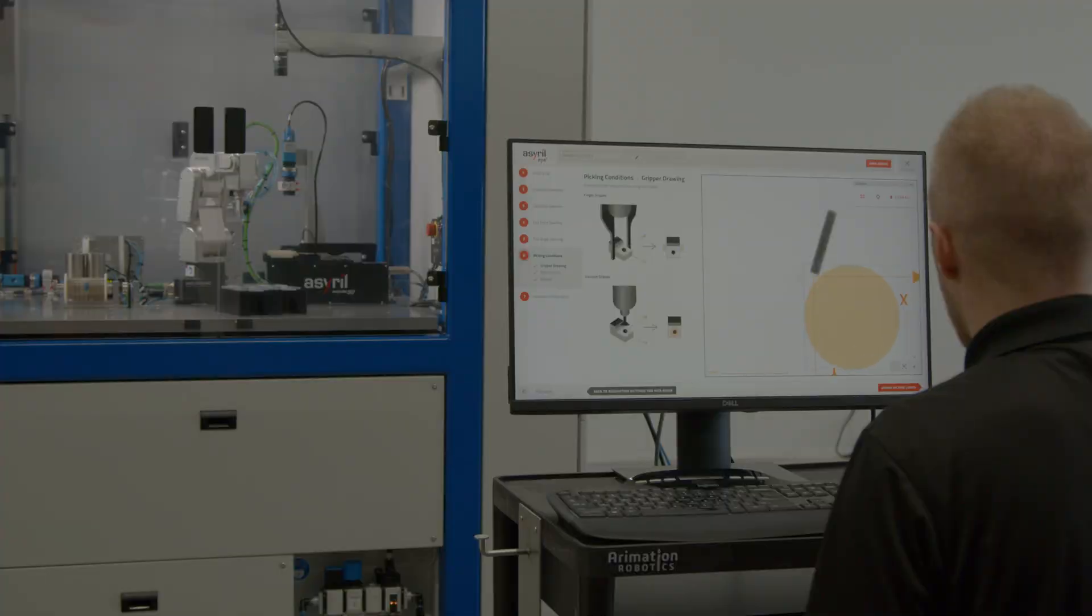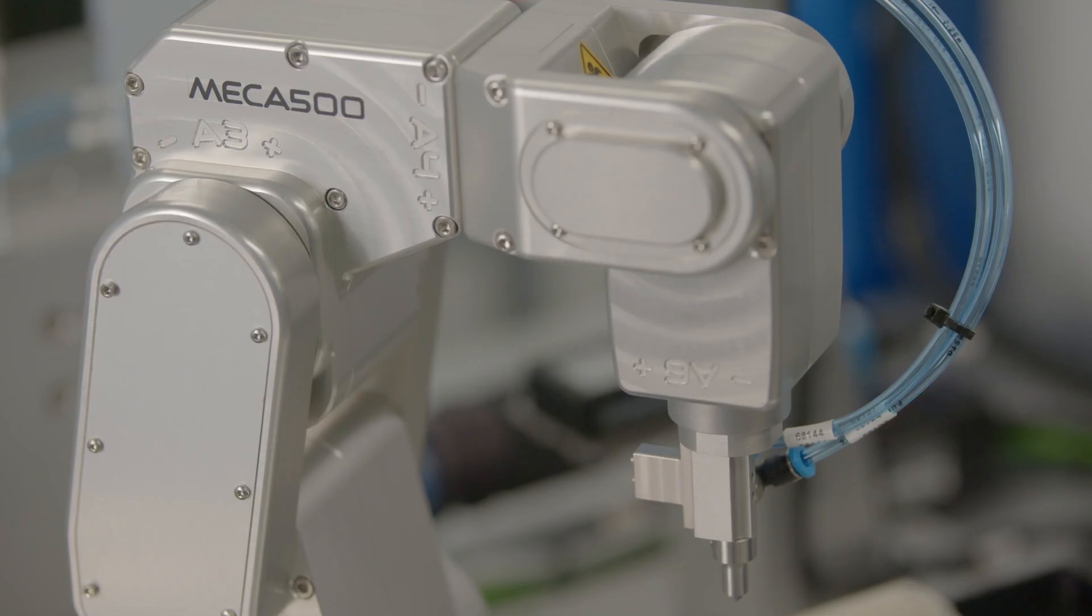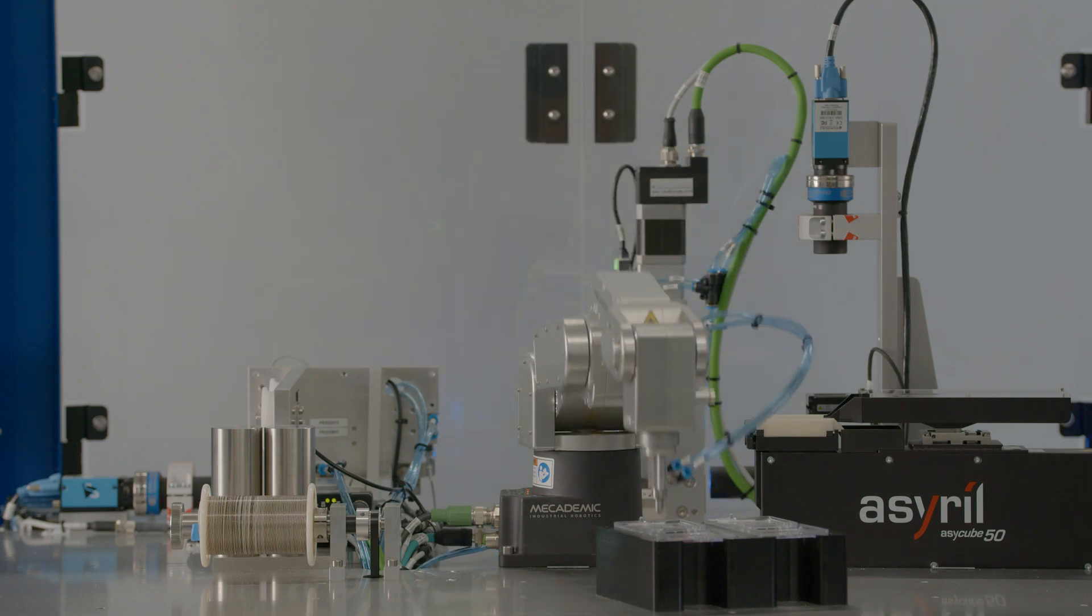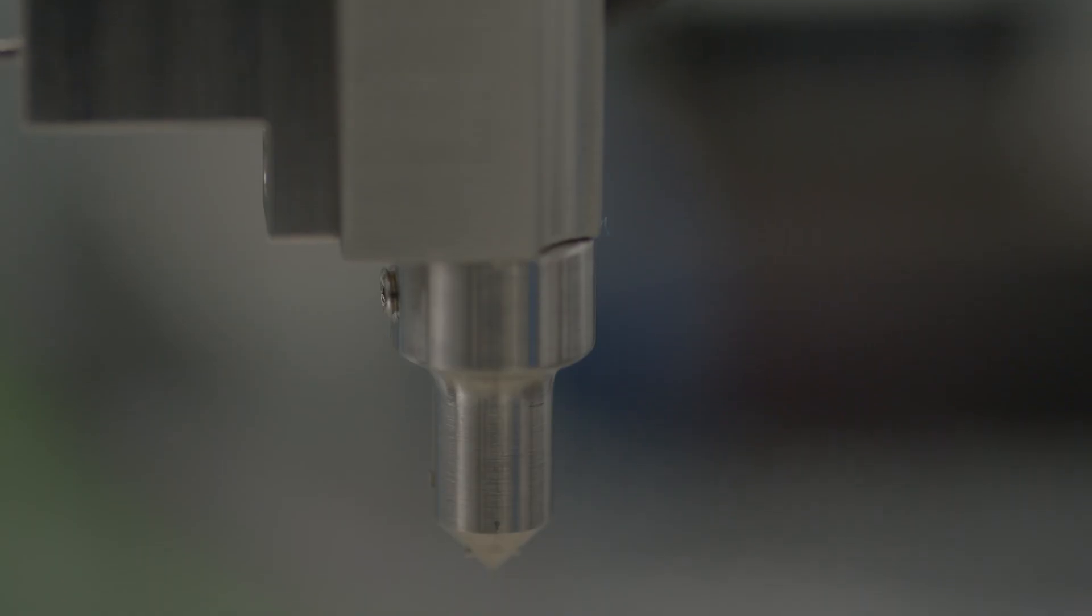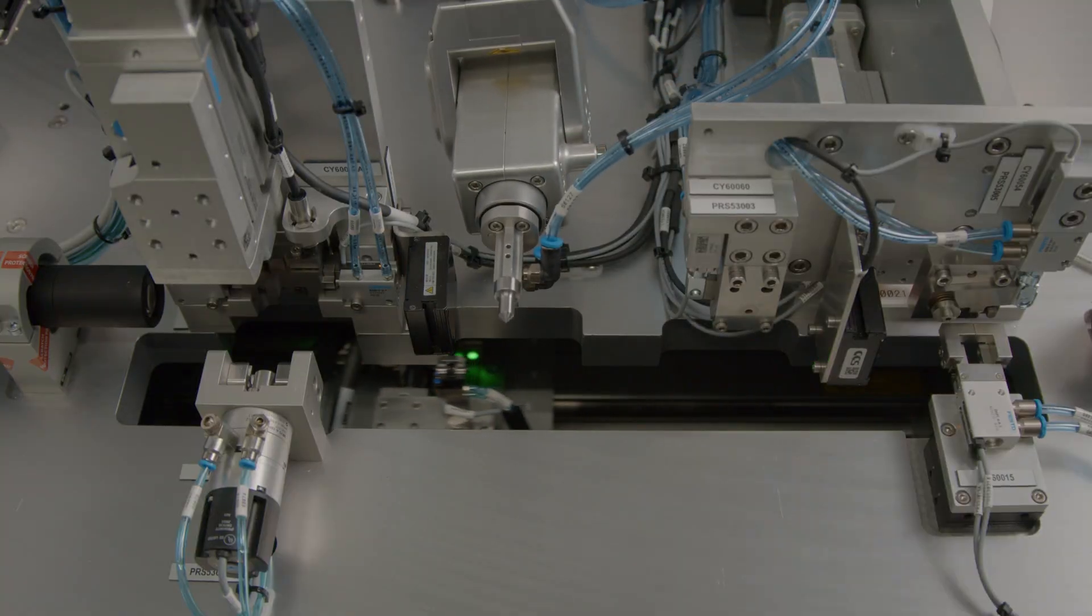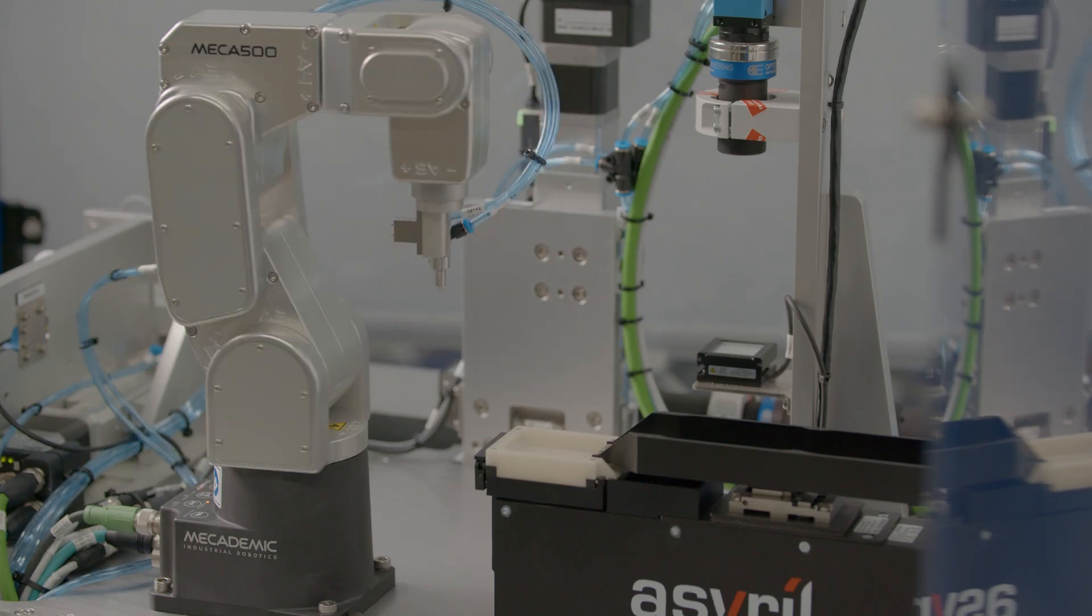Then we use a Mechademic Mecha-500 six-axis robot because we needed high precision and a small footprint. The third component is a custom automation solution that feeds and cuts the wire.